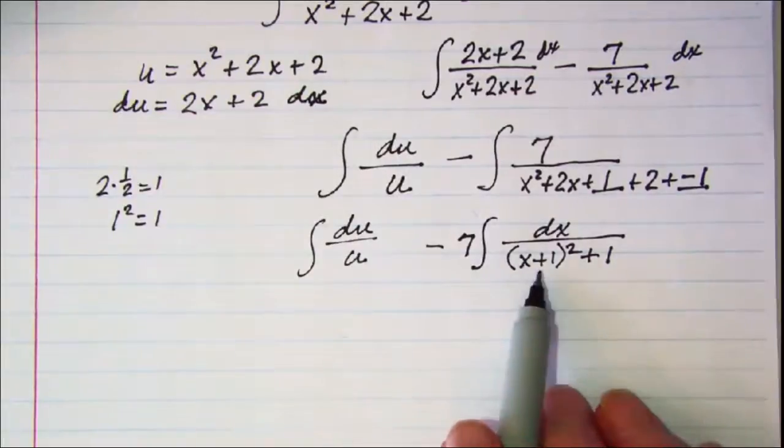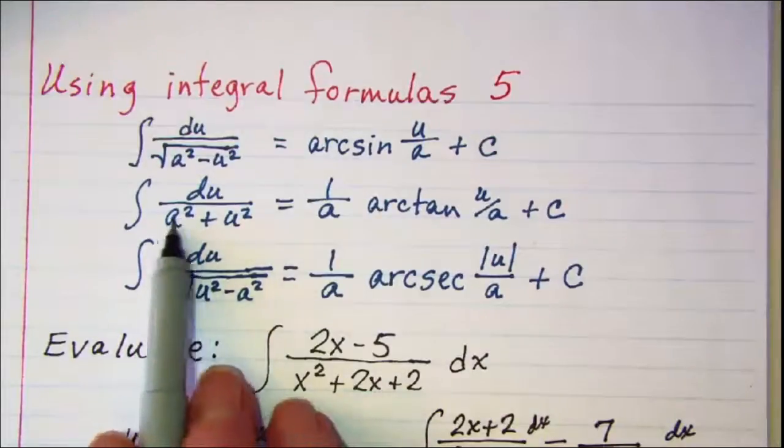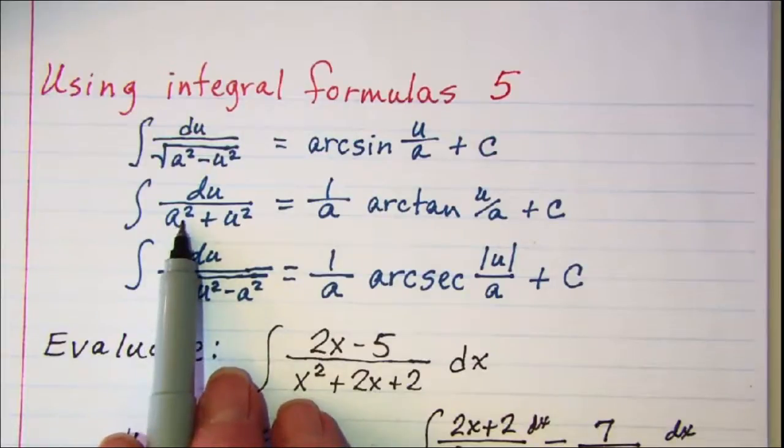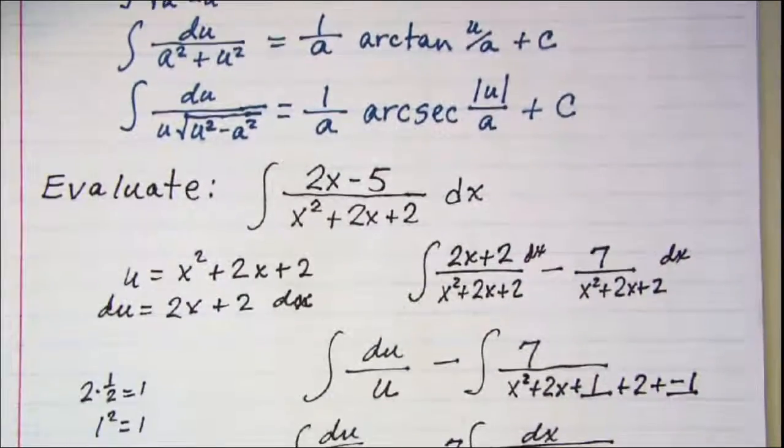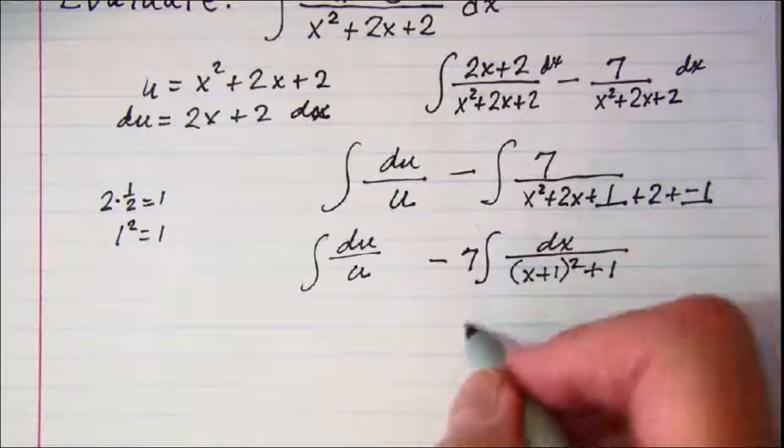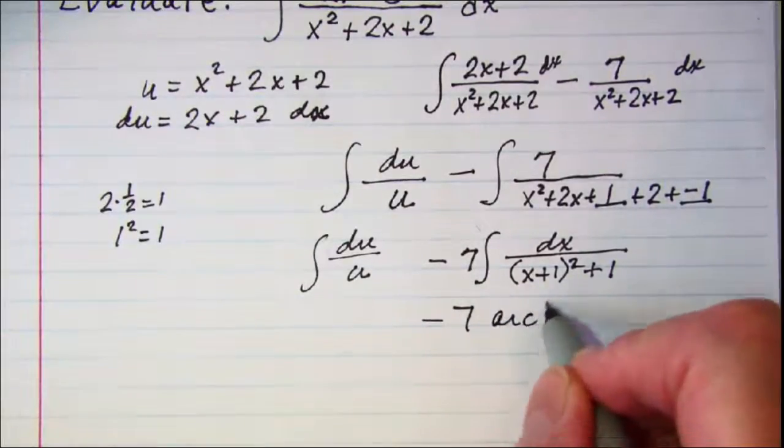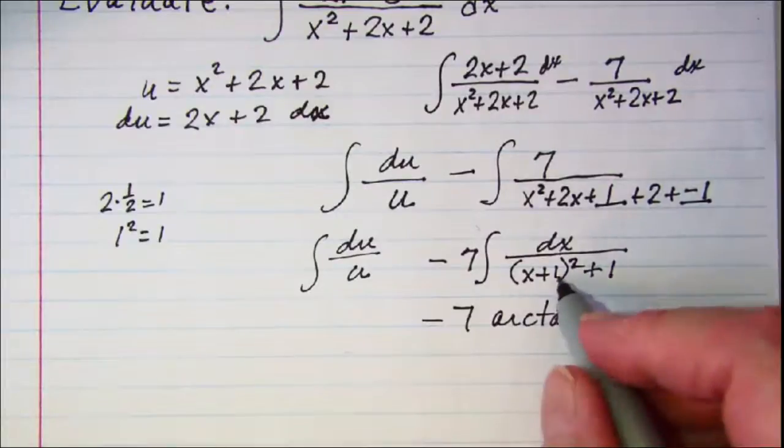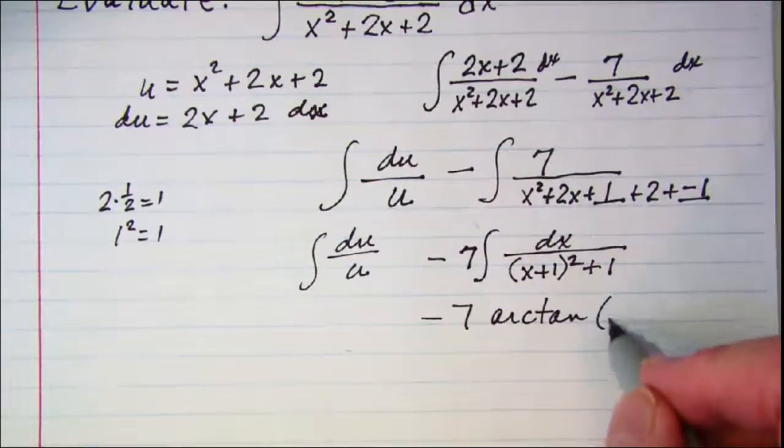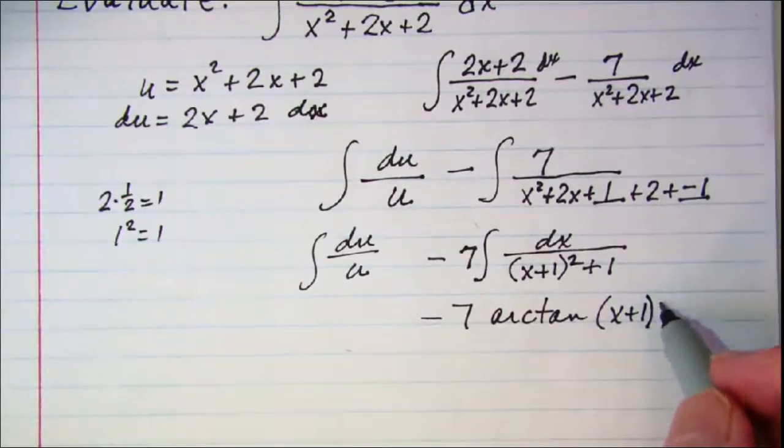So this then is my second formula. I don't need the constant written out in front but it was 1. So we can do this part as a negative 7 arctan. My u with x plus 1 divided by 1 plus a constant.